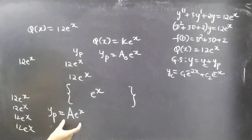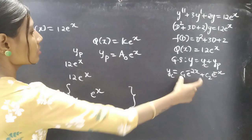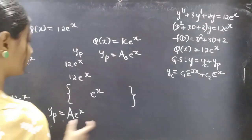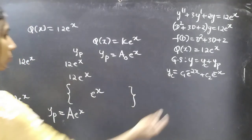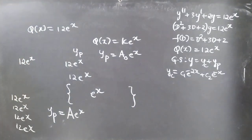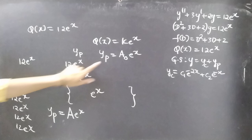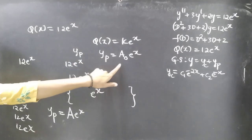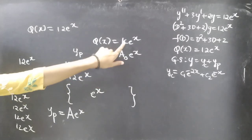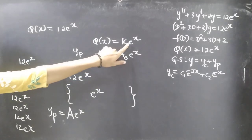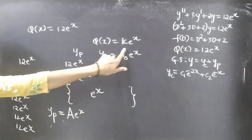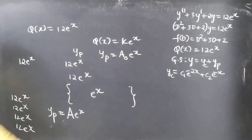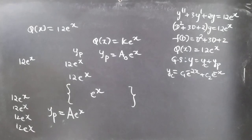Notice that yp and yc have no common term. This is the general formula: when Q(x) is of the form k·e^x, we take one undetermined coefficient times e^x for yp.